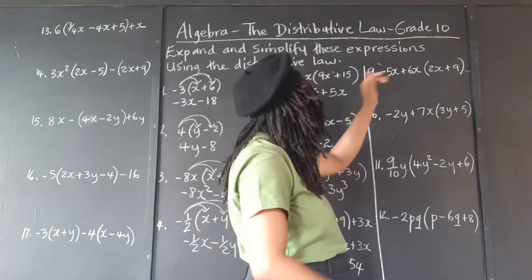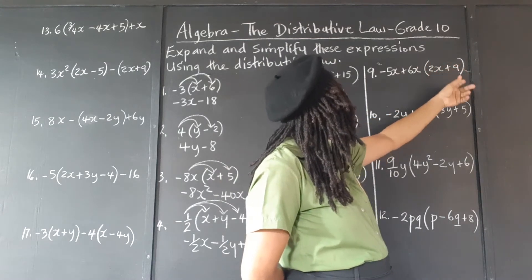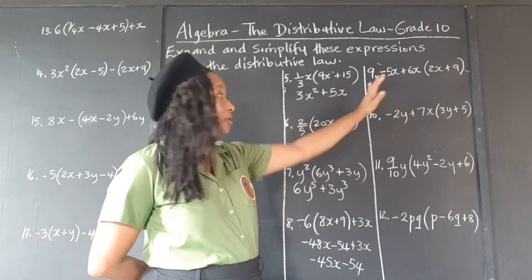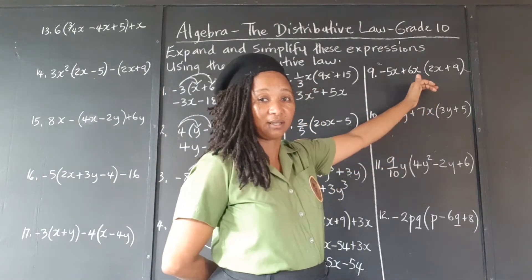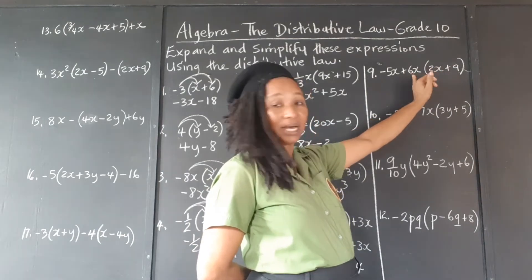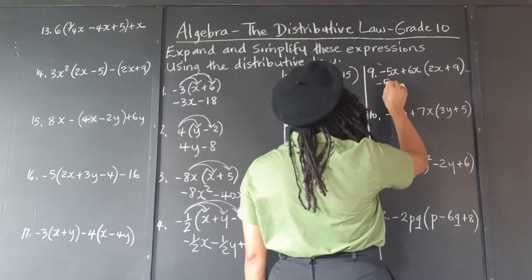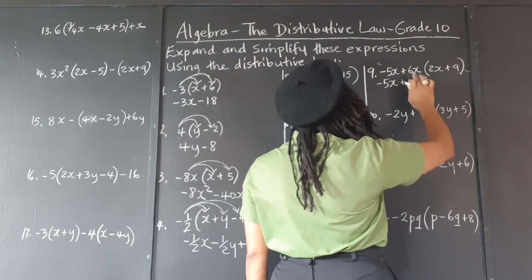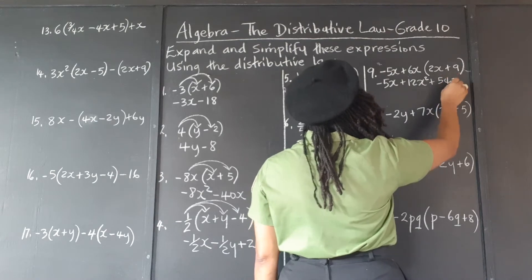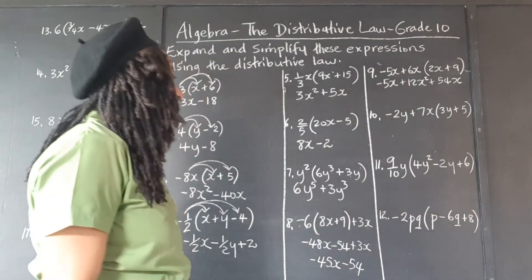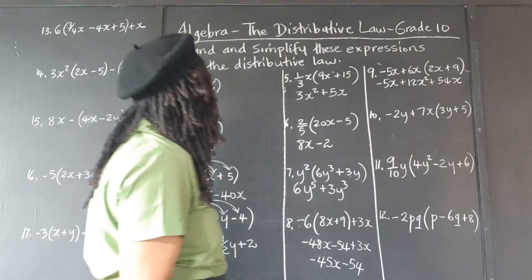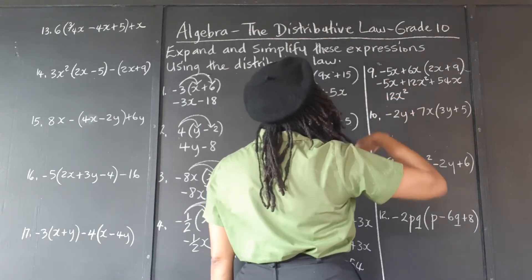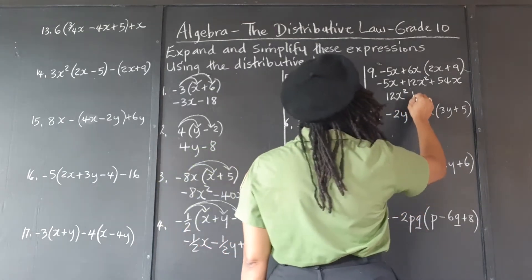We have negative 5x plus 6x(2x+9). The terms in the brackets are not affected by the negative 5x — only by the 6x, which is immediately in front of the brackets. So we write back the negative 5x. 6x times 2x is 12x squared; 6x times 9 is 54x. We can combine the negative 5x plus 54x, giving 49x. Writing the x squared term first as the highest degree: 12x squared plus 49x.